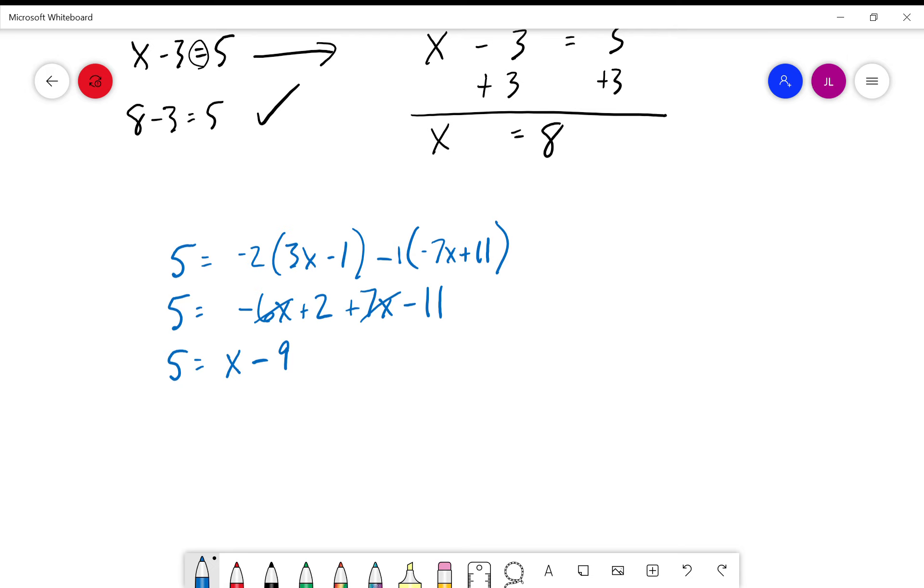And remember we're trying to get x by itself here, so basically all we want to do is add nine to both sides, plus nine, plus nine. And what we get is fourteen is equal to x.